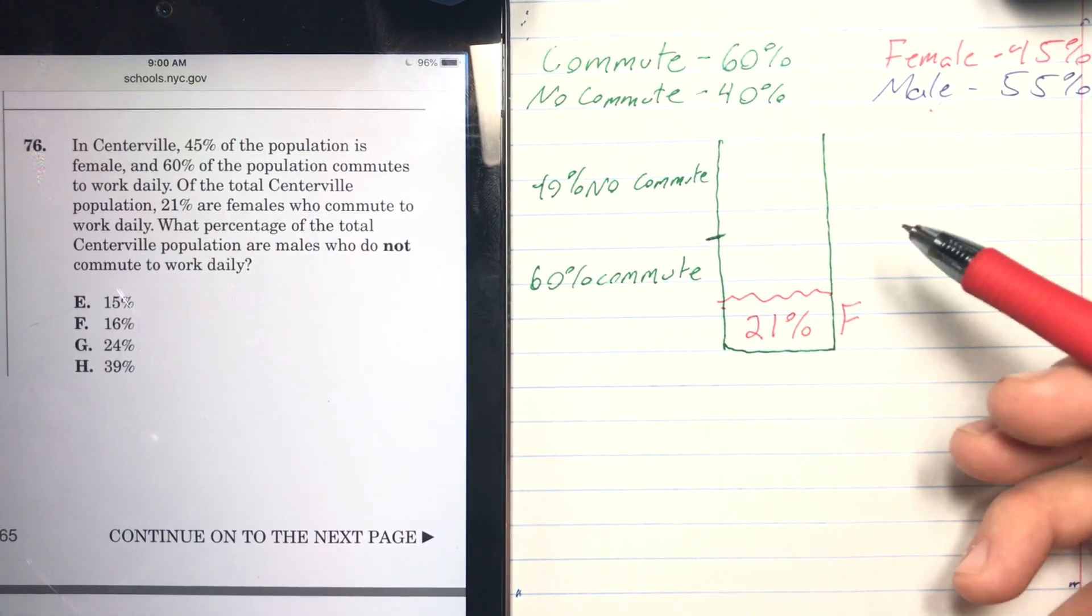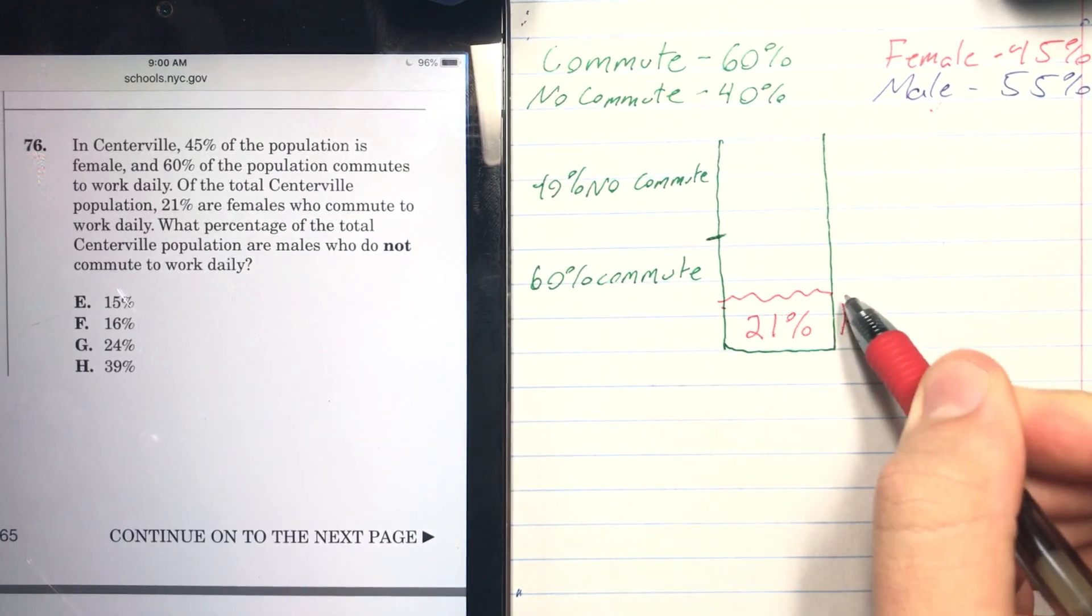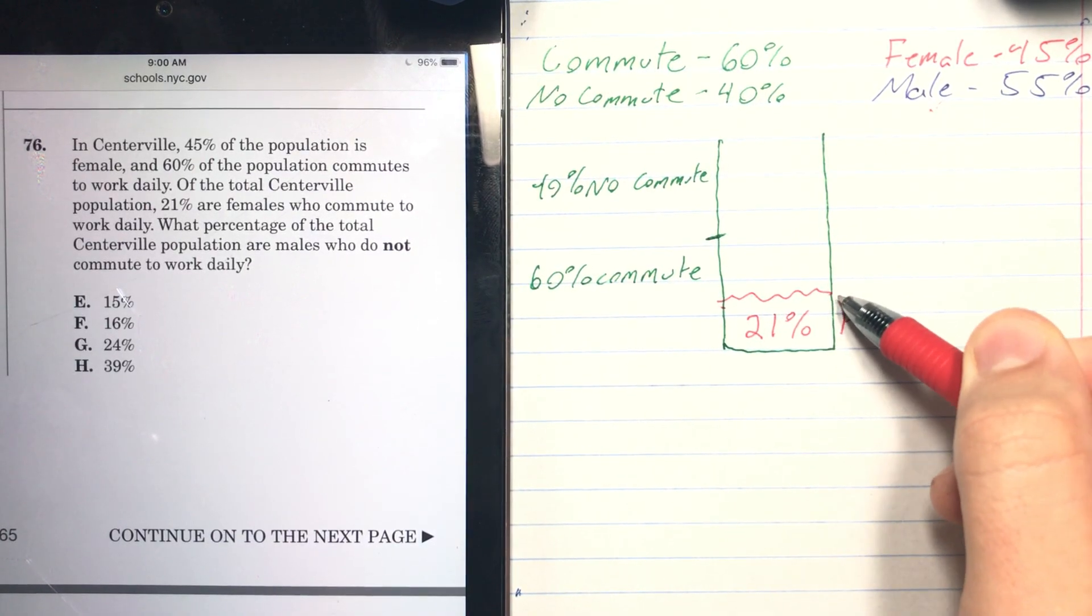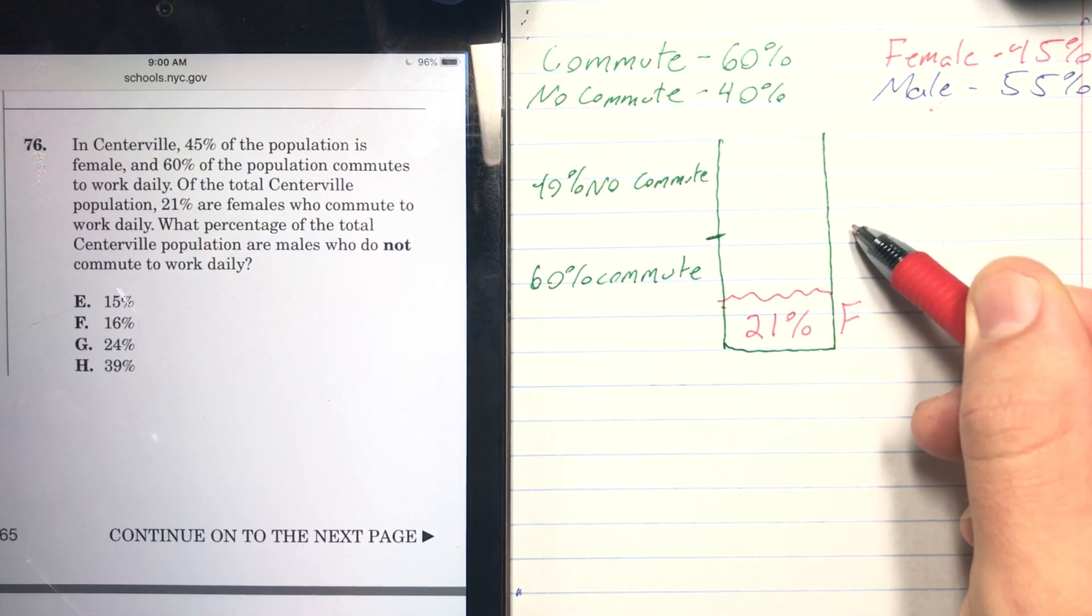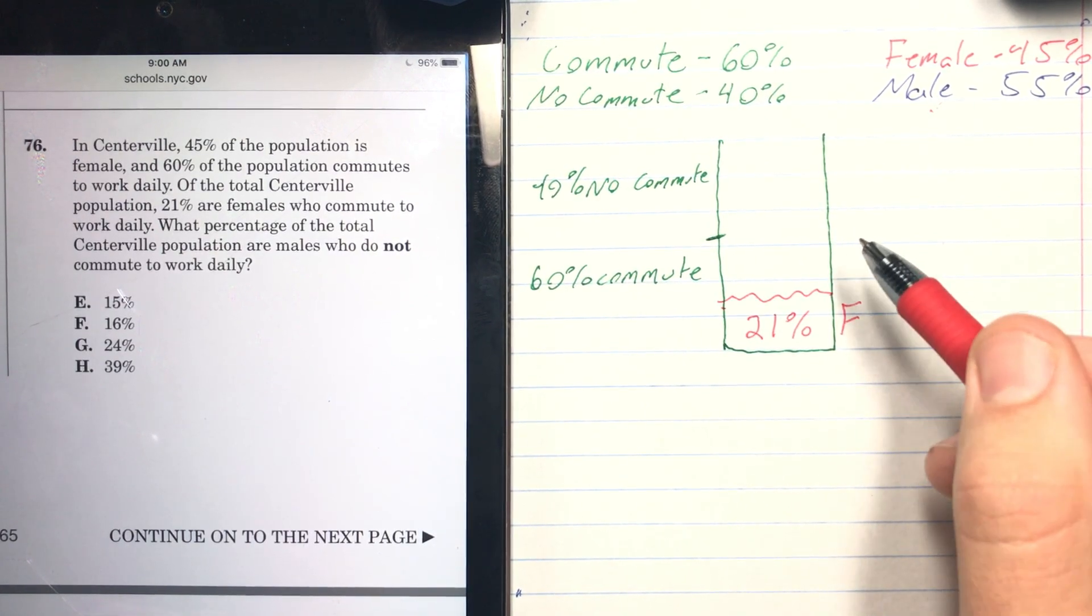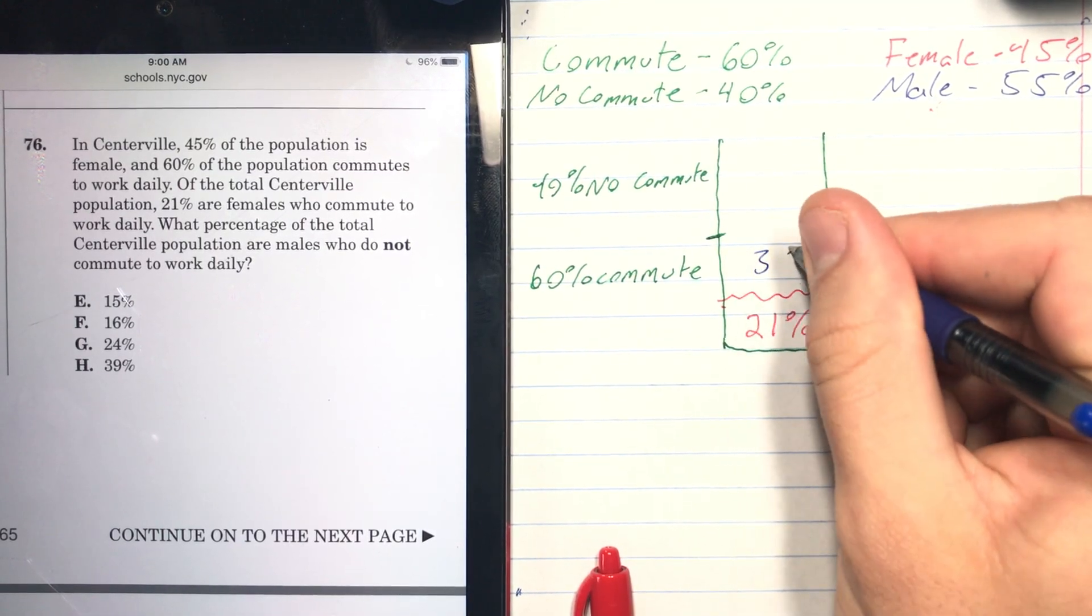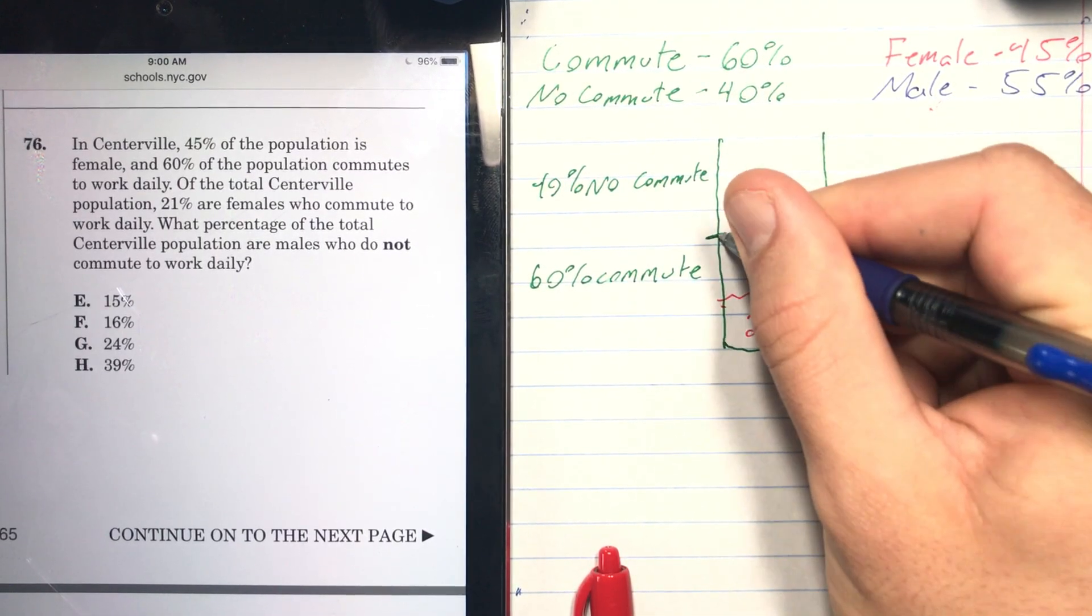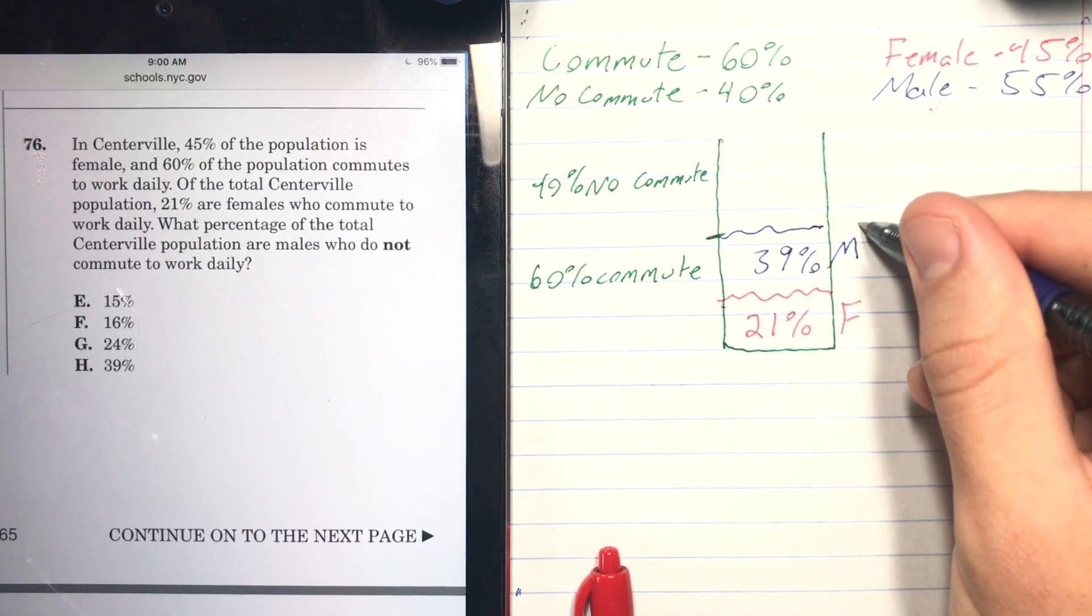How are we going to do that? Well, looking at this, if 21% of the population is females who commute, we know that 60% total of the population needs to commute. So who could be the remaining commuters? Men. And they would need to be 39%. That's men, and this entire thing adds up to 60, so it makes quite a bit of sense.